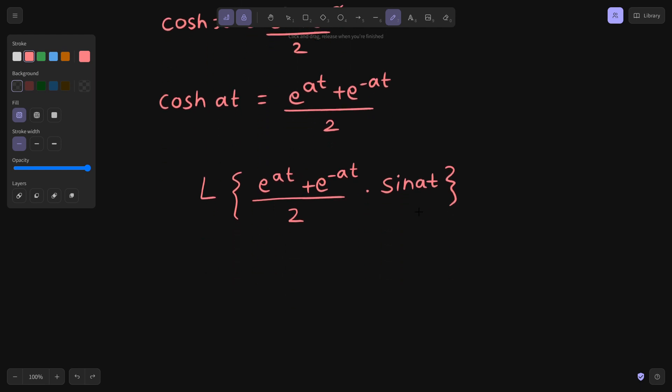One thing I can do is take 1 by 2 common and also multiply this sine separately to both the e power at and e power minus at.